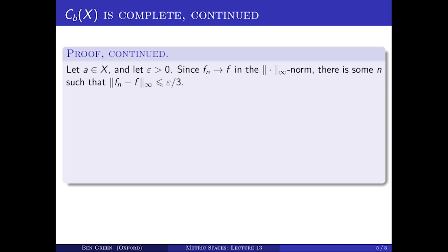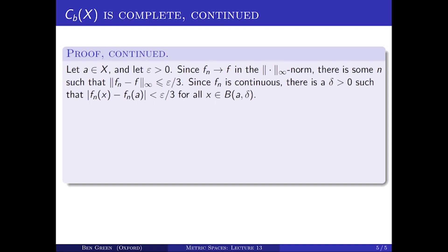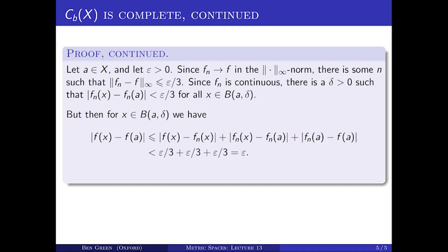That's just an application of the definition of limit. Fix a value of n with that property. Now, Fn is a continuous function, and so it's certainly continuous at A. If I apply the definition of continuity with epsilon over three in place of epsilon, I get the following: there's a positive delta such that if the distance from x to A is less than delta — in other words, if x lies in the ball of radius delta about A — then the distance from Fn(x) to Fn(A) is less than epsilon over three. But then if x lies in this ball of radius delta about A, we have the following chain of inequalities: the distance from F(x) to F(A) by the triangle inequality is bounded above by the sum of the distance from F(x) to Fn(x), plus the distance from Fn(x) to Fn(A), plus the distance from Fn(A) to F(A).